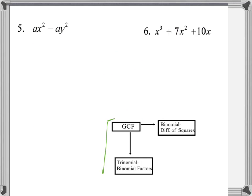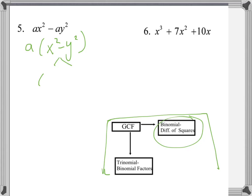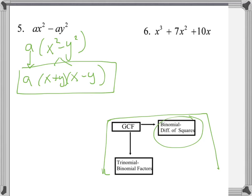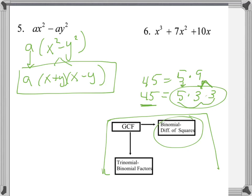The decision-making schematic reminds us: first factor out a GCF, then decide — if it's a binomial and it is a difference of squares, break it down into (x + y)(x − y) and still carry down that 'a' factor. Don't forget to bring down the GCF, because it's still a factor. It's like factoring 45: 5 times 9, but 9 breaks down further to 5 times 3 times 3. When you have the full list of factors — a, (x + y), (x − y) — multiplying them back should return the original expression.